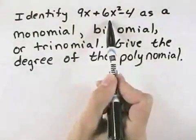which is 9x plus 6x squared minus 4. We can see the addition and subtraction signs completely separate these to make one, two, three terms. And because there are three terms, that means it's a trinomial.